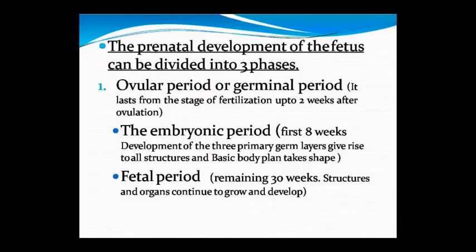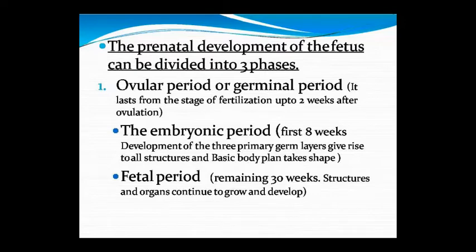Now, how is fetal development? Prenatal development occurs in three phases: the first is the ovular or germinal period, which covers fertilization through two weeks after ovulation. The second is the embryonic period, covering the first eight weeks. The third is the fetal period, covering the remaining weeks of pregnancy.